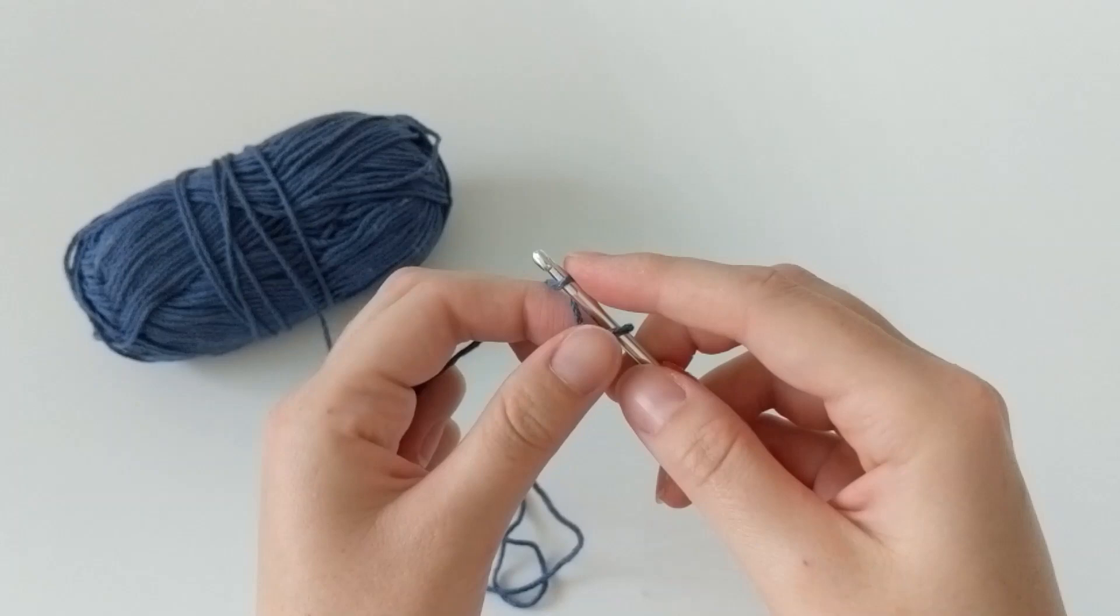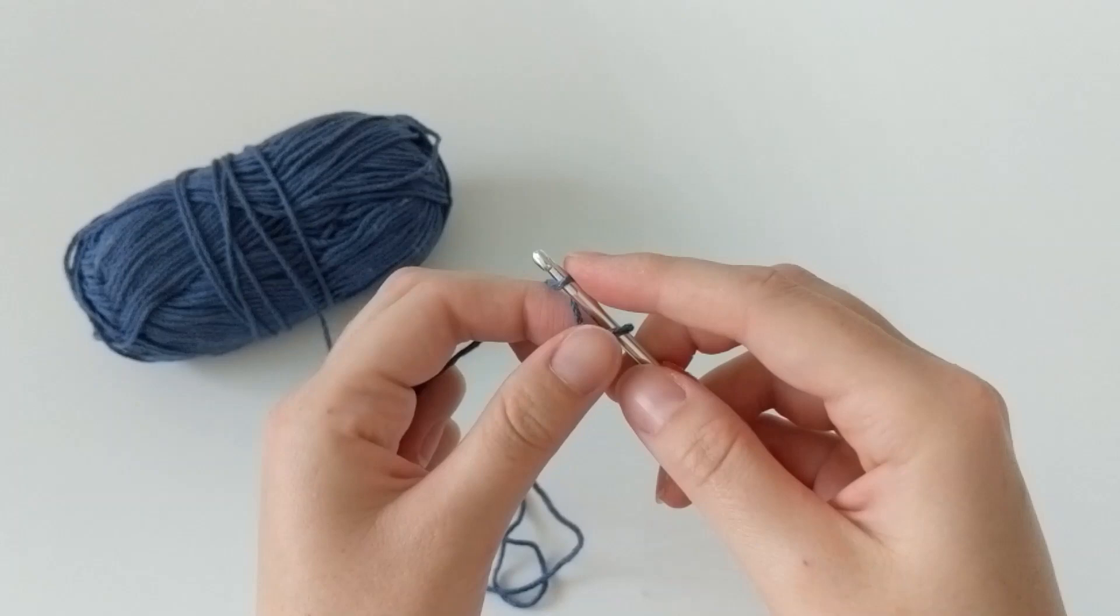Let's make one more. Wrap your yarn over the hook. This can also be called yarn over. And then you're going to pull through that loop. See? And now you have four chains.